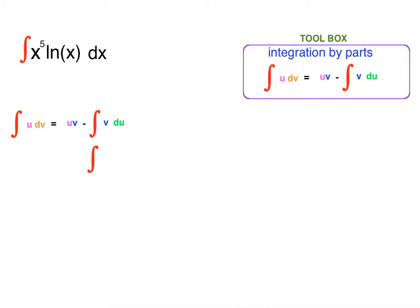So we have to define what the u and dv is. Our u will be ln of x, and our dv will be x to the fifth.